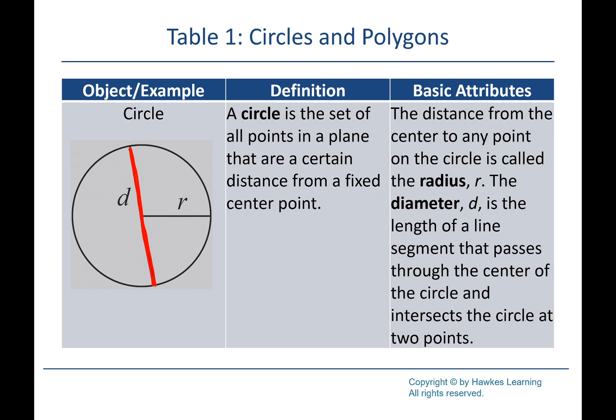As a side note, any line segment drawn across a circle has a name — the diameter is a special one, but any such line is called a chord. The diameter is a chord, but the radius is not because it doesn't go all the way across. The main ones we're concerned about are the radius and the diameter.